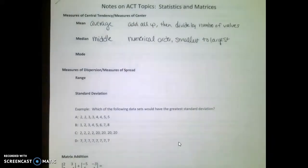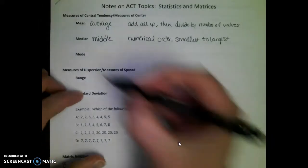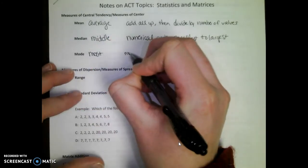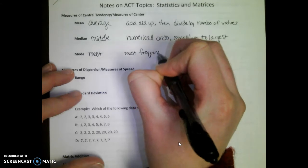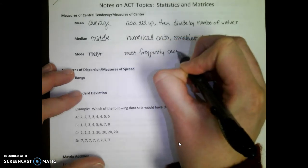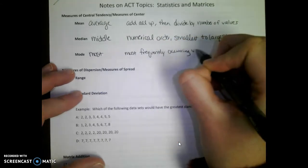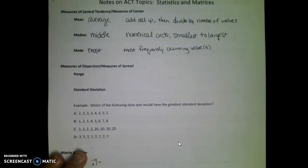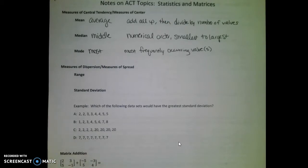The mode is the number that occurs the most, so it's the most frequently occurring value or values. It is possible to have more than one mode if there's a tie for whichever one happens the most. It's also possible for there to be no mode if none of the values repeat.